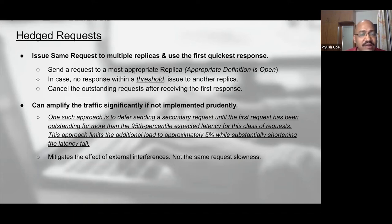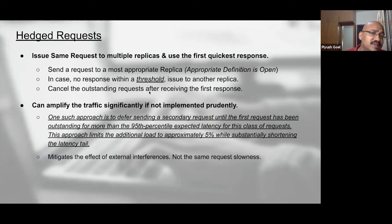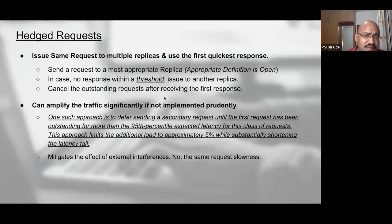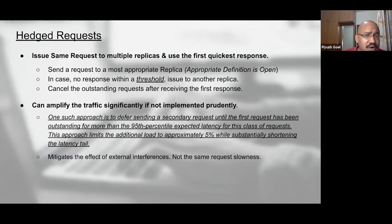There are two points here: the definition of 'appropriate replica' and the definition of a threshold. The paper does not explain what they mean by 'appropriate,' which depends on context and application. It could be the service holding the particular shard, a server holding the key, a server in the same availability zone, or a server within the same region.